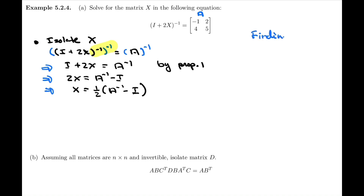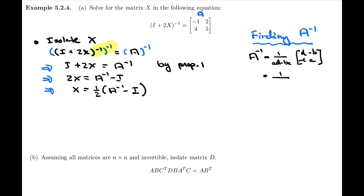Finding A inverse — we're assuming the matrix is invertible, but if it's not, we'll soon find out. We know the formula for the 2x2 inverse: it's 1 over AD minus BC, times the matrix with entries D, negative B, negative C, A. Applying that formula: 1 over negative 1 times 5 minus 2 times 4, which is negative 5 minus 8. Inside the matrix we have 5, negative 2, negative 4, and negative 1.